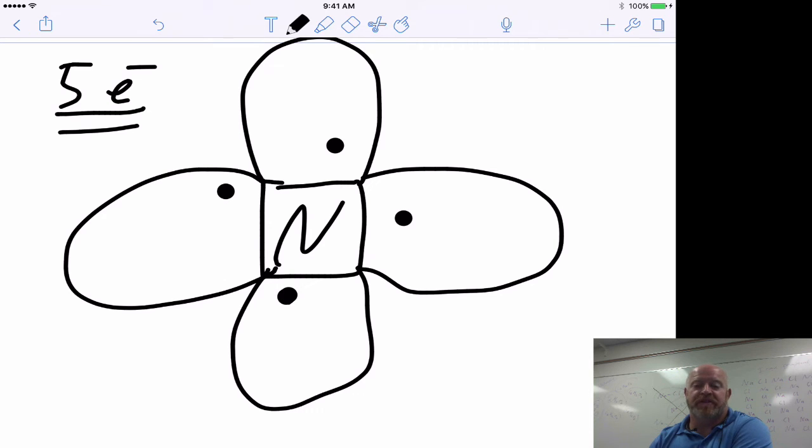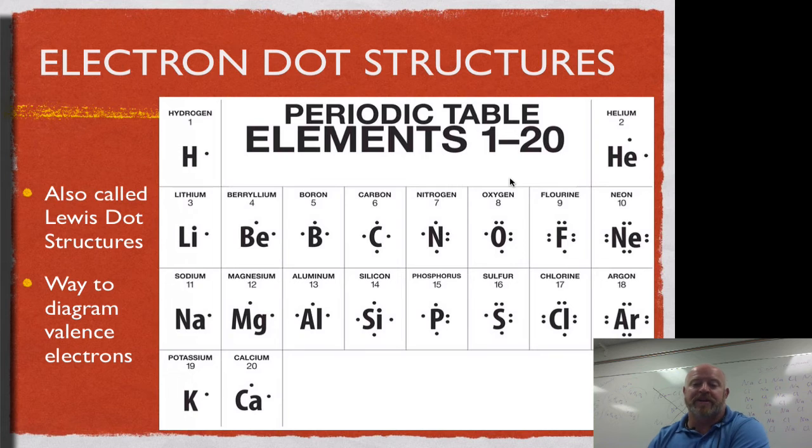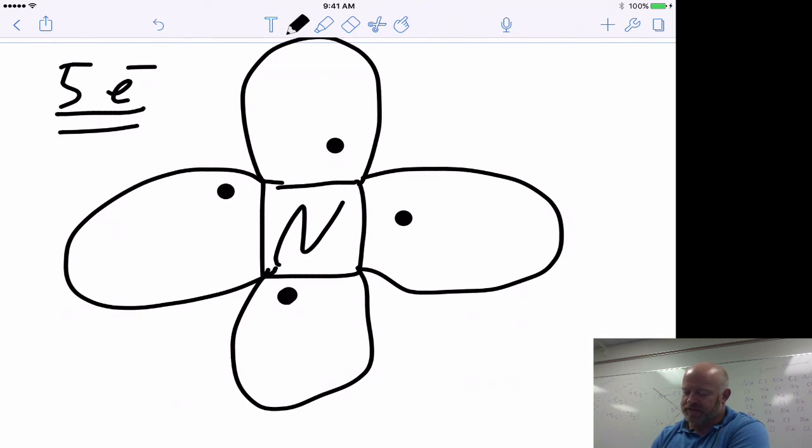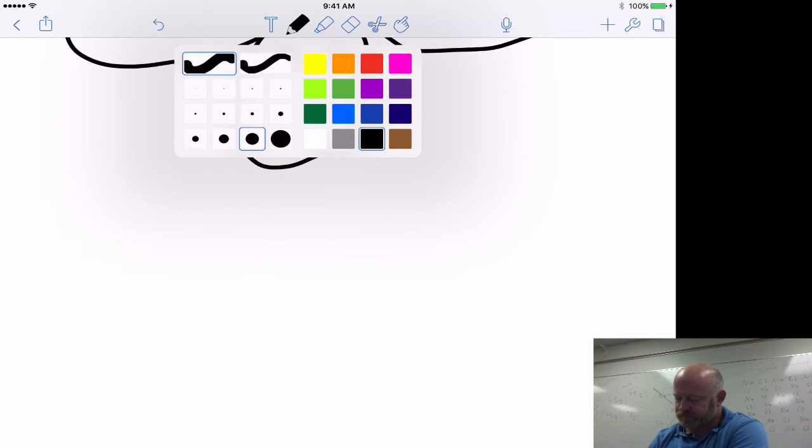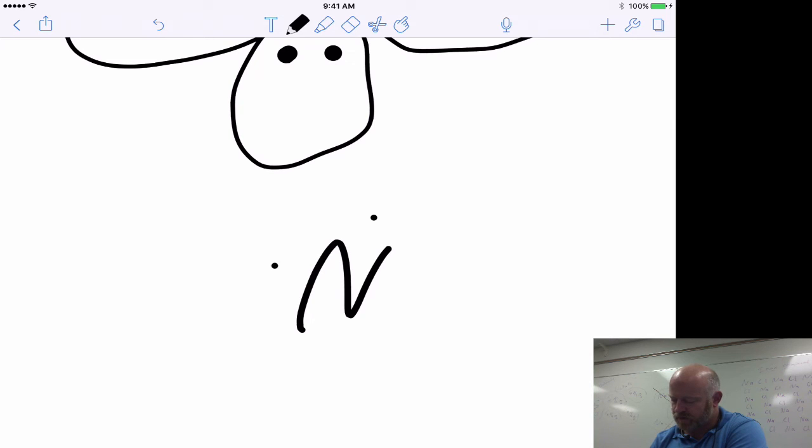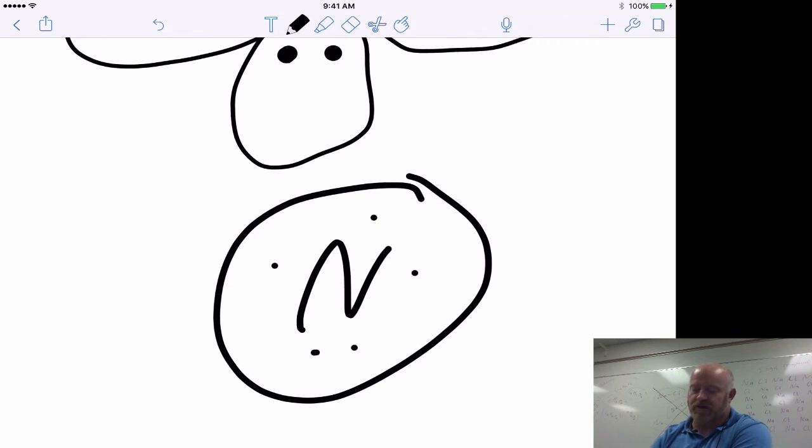For nitrogen, since it has five electrons, we're going to put one on each side of it to give it four. Then we want to put that fifth one on. In the picture on the screen, we see that the fifth one got paired up. It doesn't matter where you pair it up, but one of these four quadrants needs to have a pair. So I'm going to put it on the bottom. We end up with five electrons around the nitrogen. We end up having one on each side and one is paired up. We get nitrogen with one on each side and a pair at the bottom. This would be its electron dot structure.